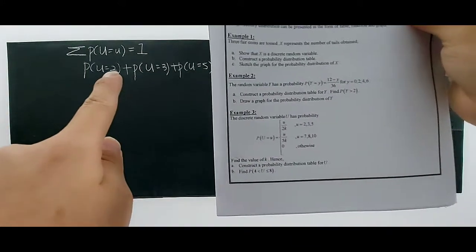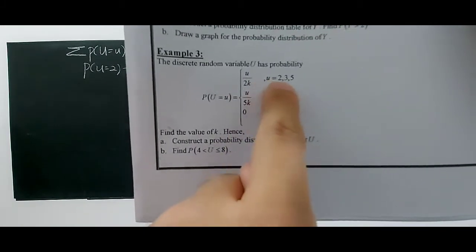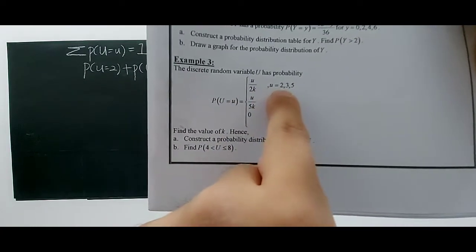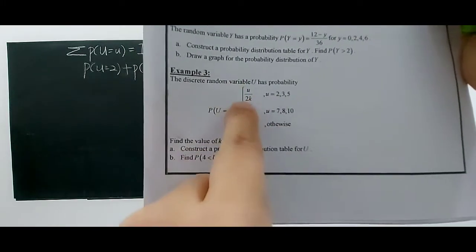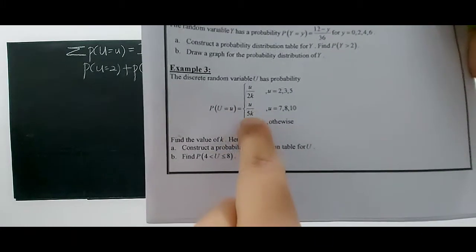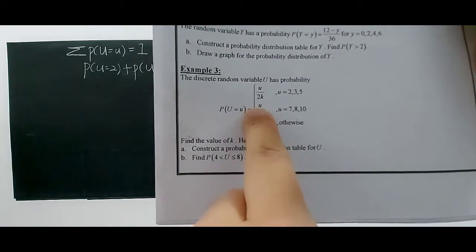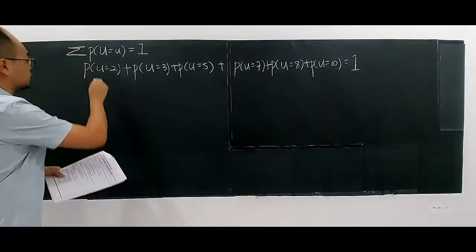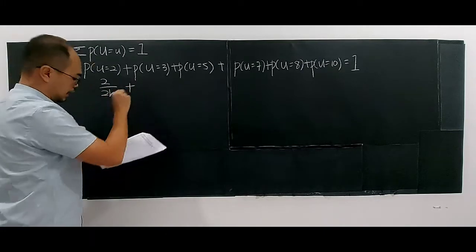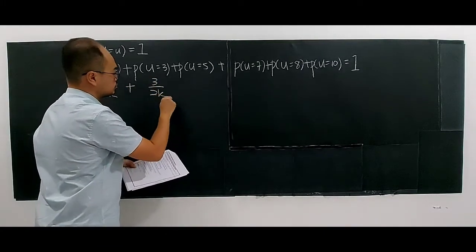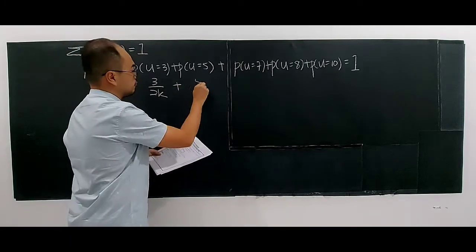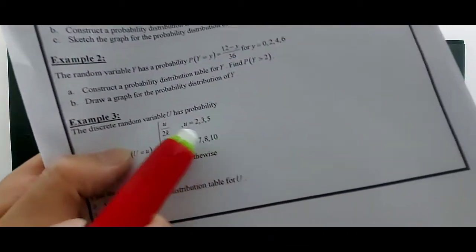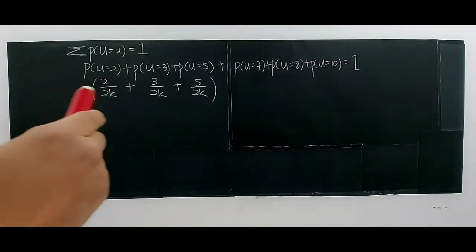When u equals 2, substitute 2 into the function: you get 2 over 2k. When u is 3, it's 3 over 2k. When u is 5, it's 5 over 2k. For u=2, 3, and 5, they all use the same function, so you have denominator 2k. When u is 7, we use the other function: 7 over 5k. Similarly for u=8 and u=10, you substitute 8 and 10 into that function.